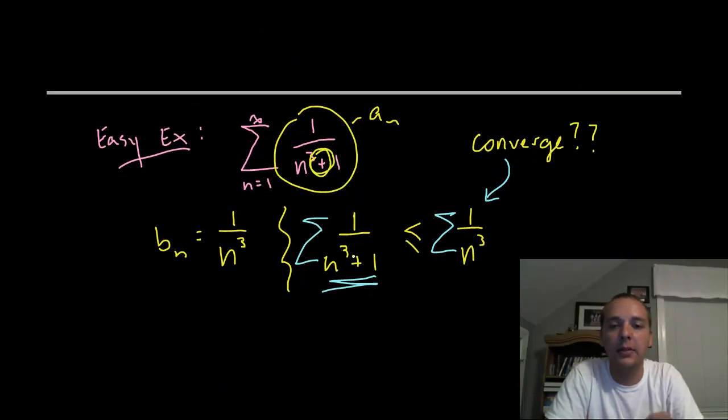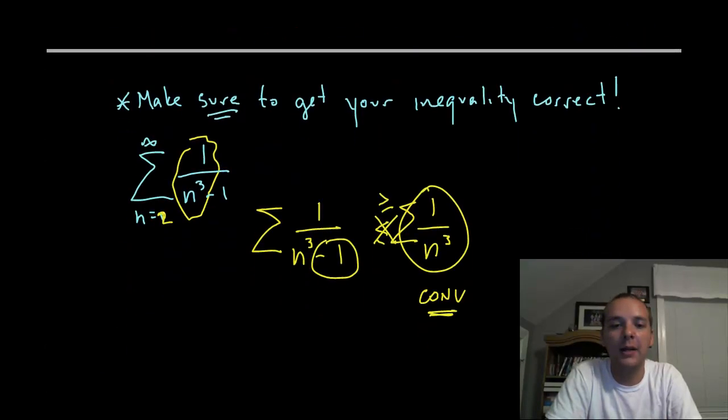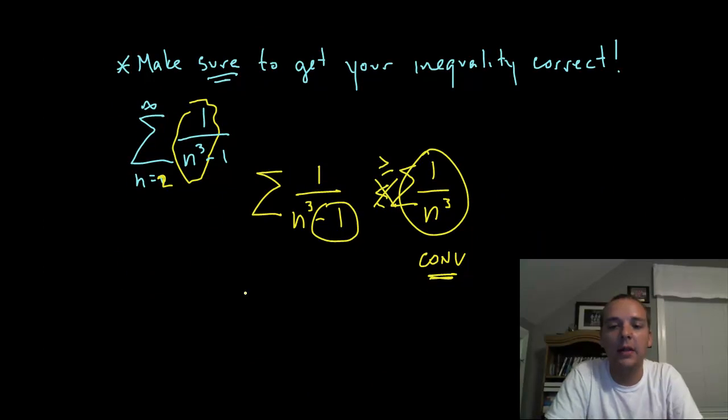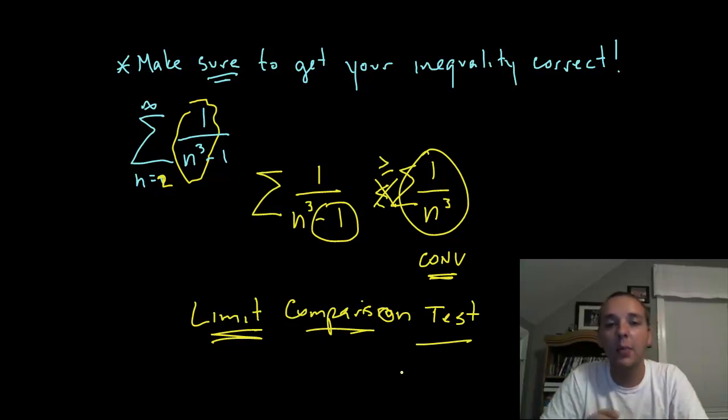Hopefully you notice that subtle difference between the first problem and the last one. This one was a plus so the inequality worked in the right order, this one was a minus so it kind of didn't work. Now if this had been the limit comparison test, we would have been much better off. So I usually direct my students to focus more on the limit comparison test than the direct comparison test, but nevertheless the direct comparison test is good in the right situation.